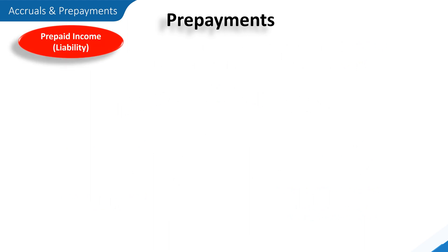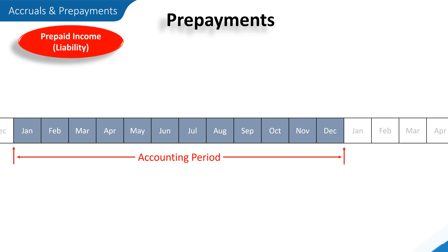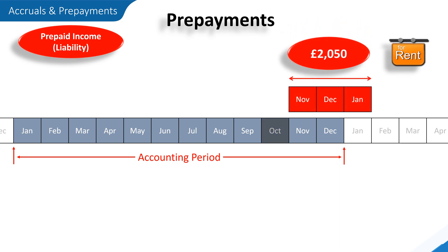Starting with prepaid income. Prepaid income is income that has been received in advance of the period it relates to. Let's look at our accounting period that runs from January to December, and assume our business rents out some property on terms where the tenant pays rent three months in advance. In October the tenant pays £2,050 in advance rent, relating to November and December in the current accounting period and January in the next. When preparing the financial statements, the rental income relating to January will need to be removed from the income earned in the current accounting period, as it relates to the next. Let's assume the amount relating to January is £700.